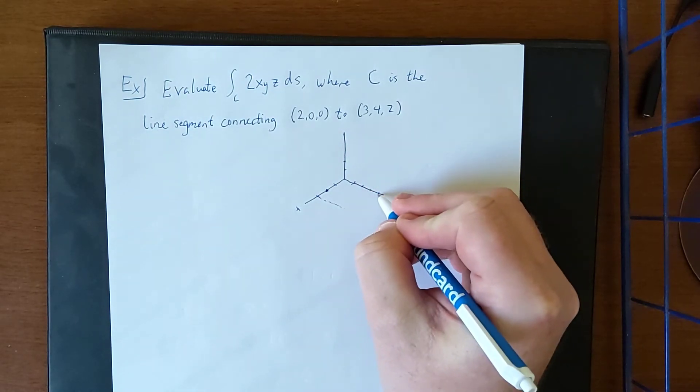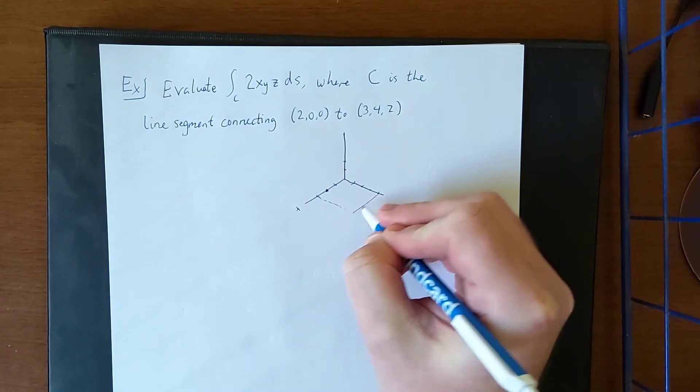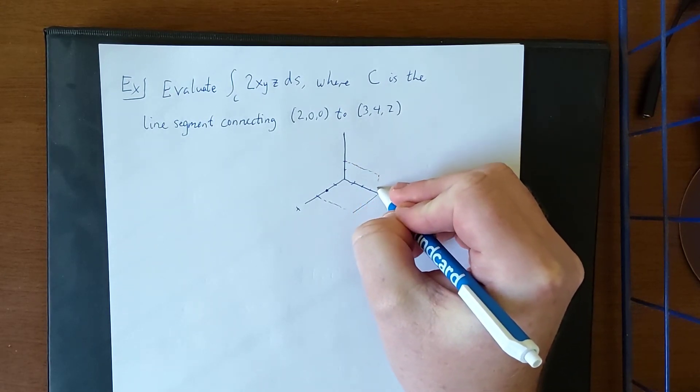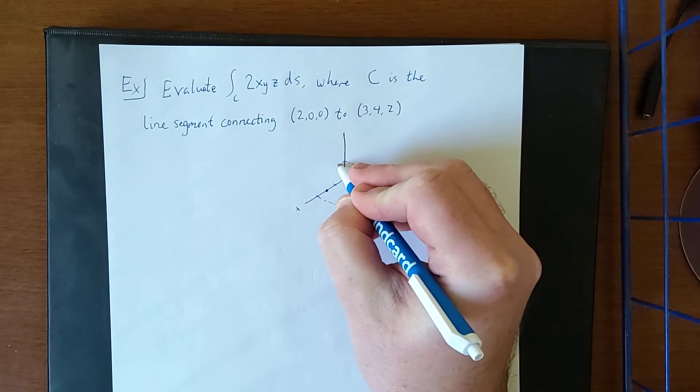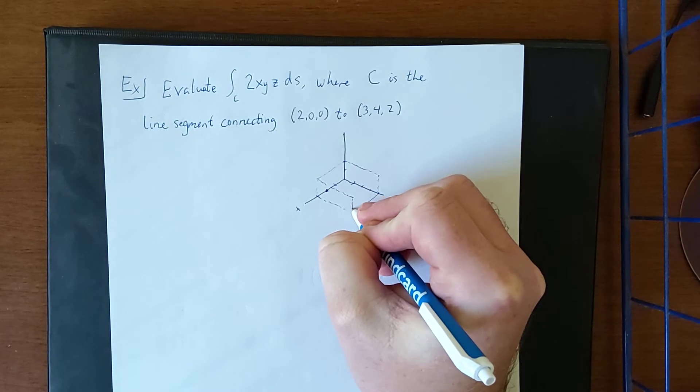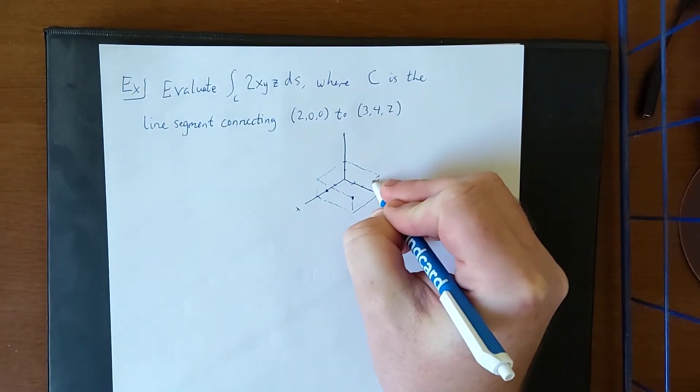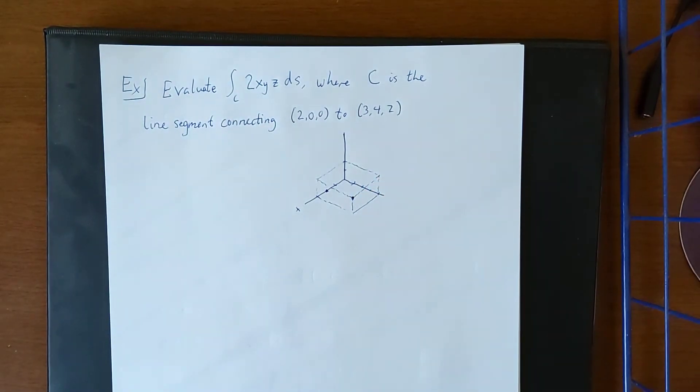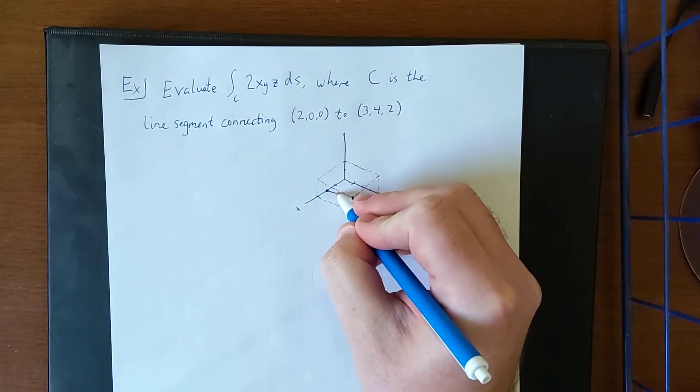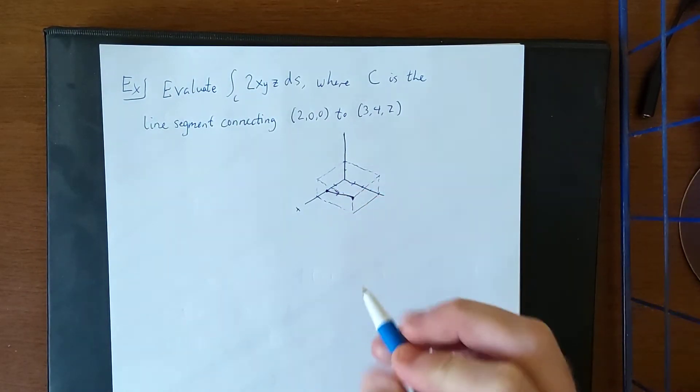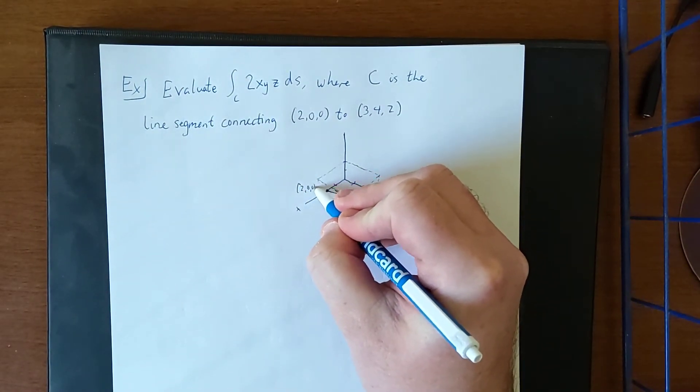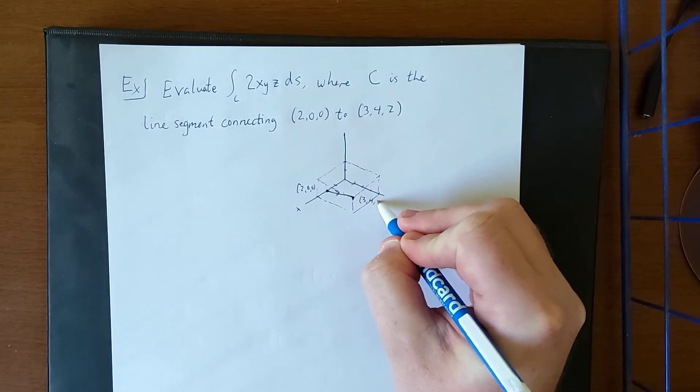To come up with the placement of the second point, we use a combination of traces to get ourselves into the right position. Draw an ordered triple right about there. So C is going to be the curve connecting this initial point of (2,0,0) to this terminal point of (3,4,2).